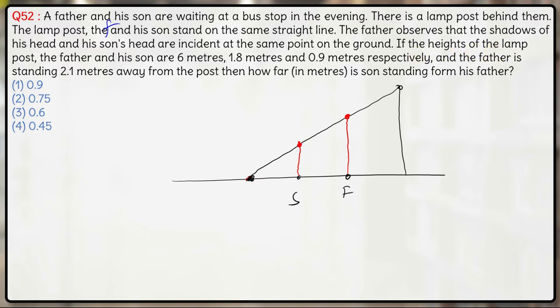Now, if the height of the lamp post, the father and his son are 6 meters, 1.8 meters and 0.9 meters respectively and the father is standing at a distance of 2.1 meters from the lamp post, how far is the son standing from his father?